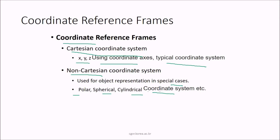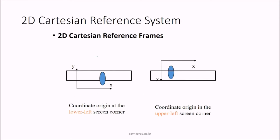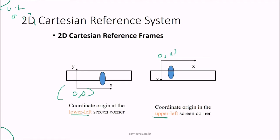The cylindrical coordinate systems are shown by non-Cartesian coordinate systems. This is the 2D Cartesian reference system used in various graphics. If you have the lower left screen corner, the coordinate origin is at the lower left screen corner. While at the upper left screen corner, the origin (0,0) is placed there. The x-axis is here and the y-axis grows accordingly. This is the 2D Cartesian reference frame with lower left and upper left screen corner.